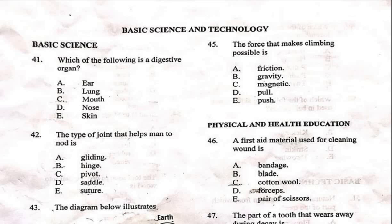We are going to go straight to the questions. Basic science starts from question 41 — from question one you have mathematics down to 40, therefore from 41 is basic science. The first question says: which of the following is a digestive organ? A) ear, B) lung, C) mouth, D) nose, E) skin. The correct answer is mouth, which is C. The mouth is the entry point for food and begins the process of digestion through mechanical and chemical means — chewing and saliva. That is where digestion starts.